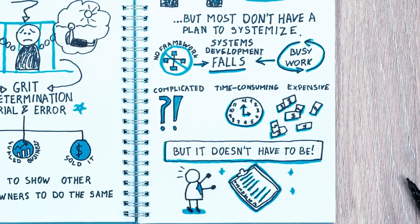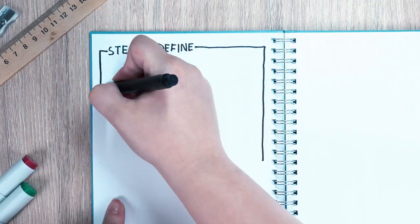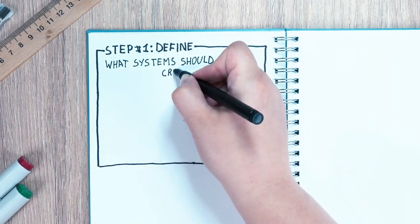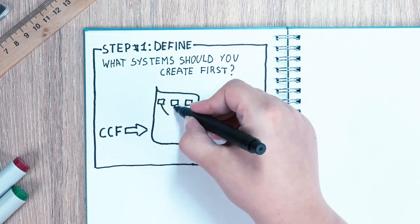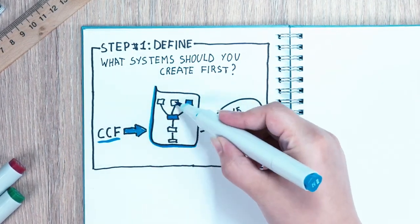The process has seven steps. Step number one is to define and answer the question, what system should you create first? Using a tool called the Critical Client Flow, or CCF for short, it's possible to identify the 10 most critical systems in the delivery of your core product or service.